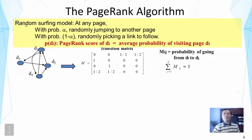The random surfing model captures the idea of counting in-links. It also considers indirect in-links: if the pages that point to you themselves have a lot of in-links, that means the random surfer will very likely reach one of them, which increases the chance of visiting you. So this is a nice way to capture both indirect and direct links.